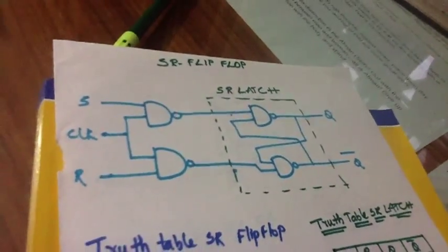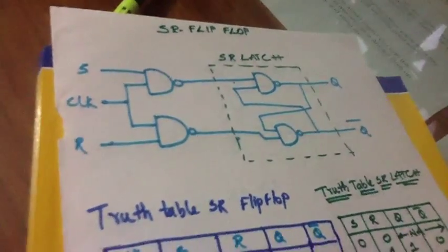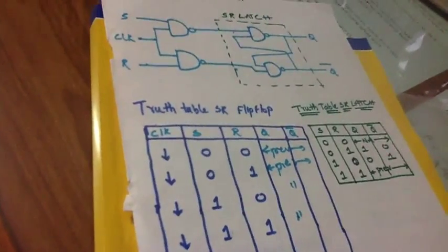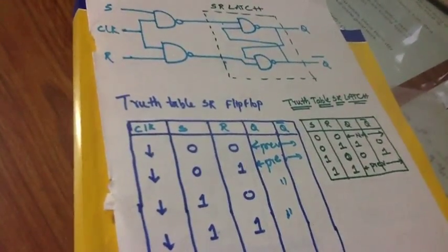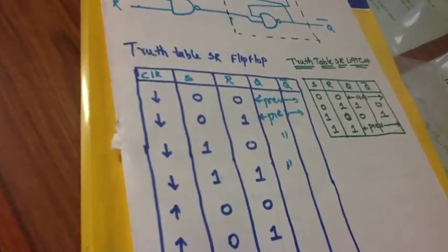Now let us see how to write the truth table for SR flip-flop. When the clock pulses are down, whatever may be the feedback, the output is always previous state. Now let us see our first condition.